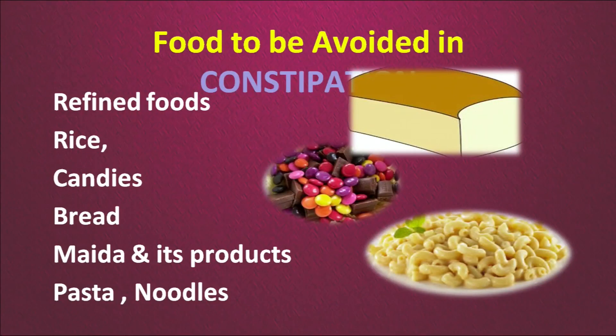What foods should one not eat during constipation? Refined food, rice, candies, sweets, bread, and refined maida products like pasta and noodles should be avoided, because they are made with refined flour.